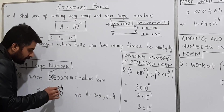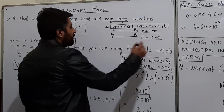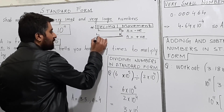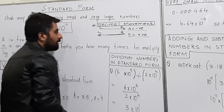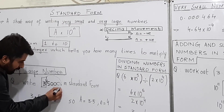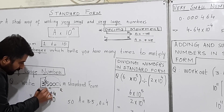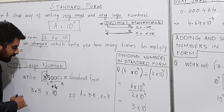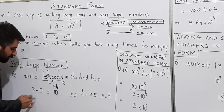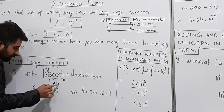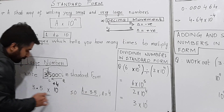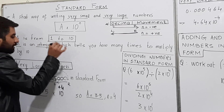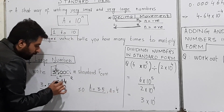For the sign convention of the power, remember this rule: if you move from right to left, then n will be positive. In this case I moved my decimal from right to left, so I have chosen a positive sign for n. So the answer in standard form for 35,000 is 3.5 × 10 raised to the power +4. Here a is 3.5, which is between 1 and 10, and n is +4, which is an integer.